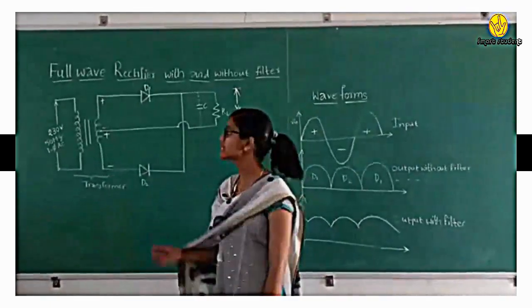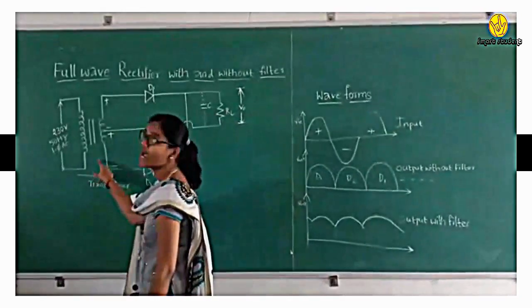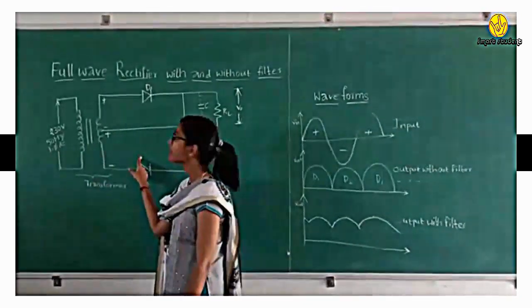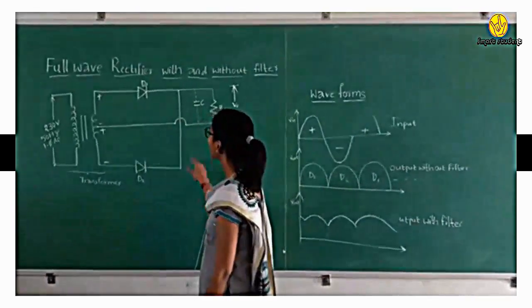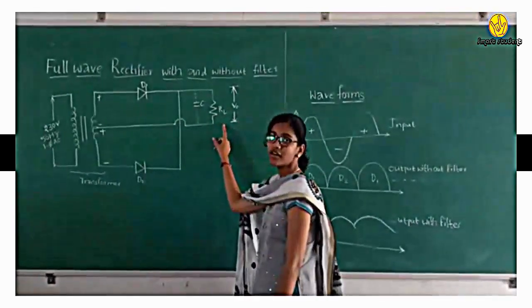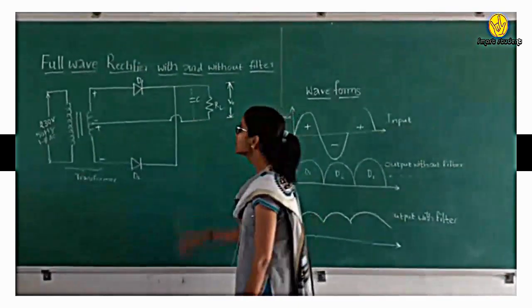We consider a transformer, and this is a center tap transformer. Then we consider two diodes named D1 and D2. Across the diode we consider a load for without filter, and for with filter we consider a capacitor across the load.